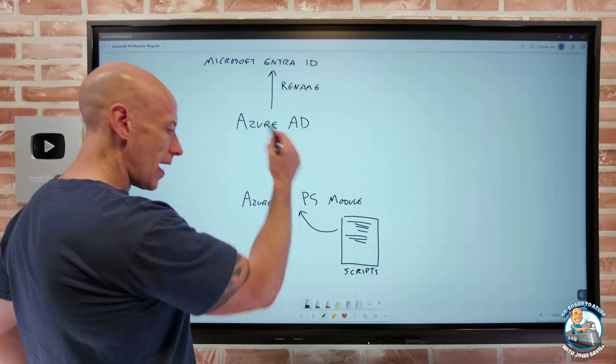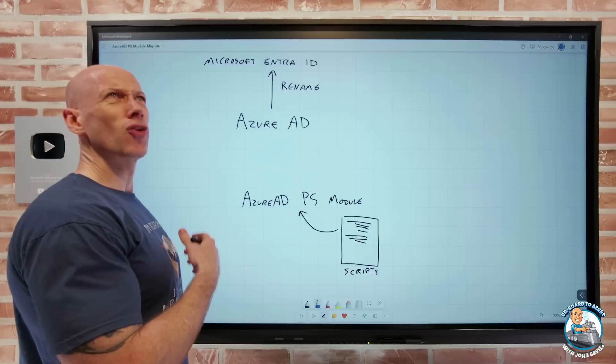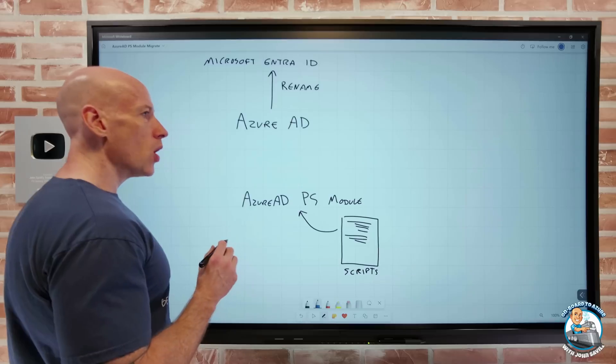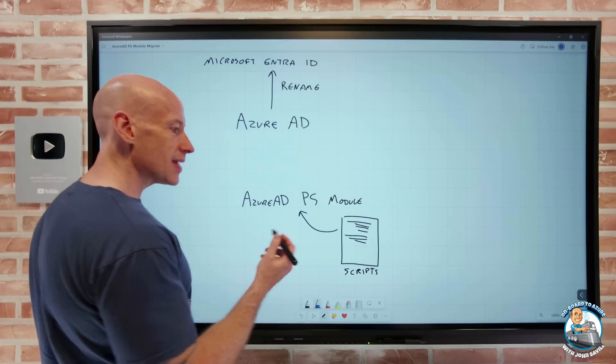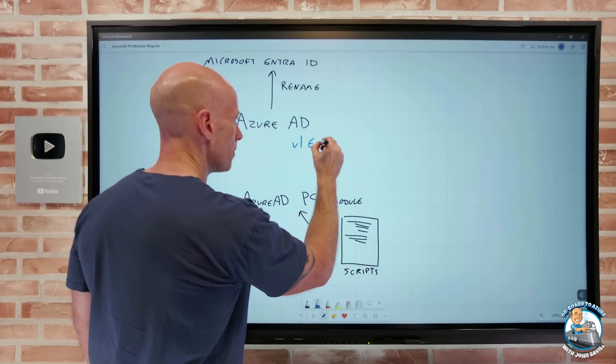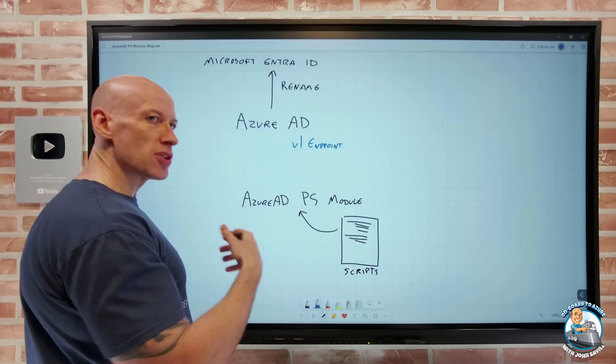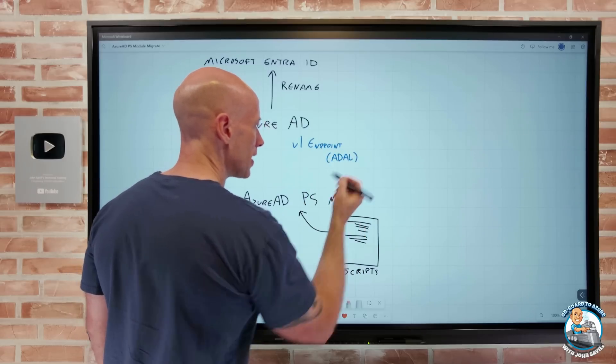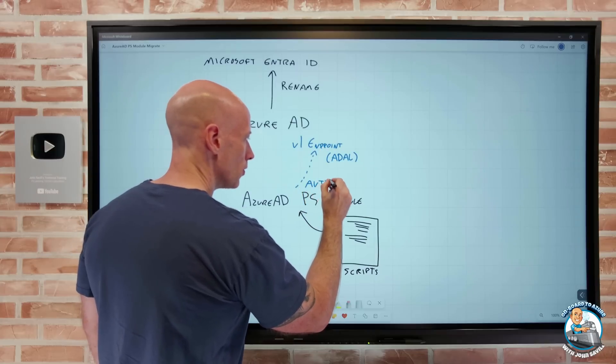In the beginning, if we think about Azure Active Directory, there were actually previous modules. We had the MS Online, we had the Azure AD module, the Azure AD Preview module, and all of these worked against different APIs. For the authentication part, there was this Azure AD developer endpoint, a V1 endpoint. On the client side, if I wanted to write programs to interface with the authentication, we could use the Azure AD Authentication Library, ADAL. All of the modules used this V1 endpoint for their authentication.